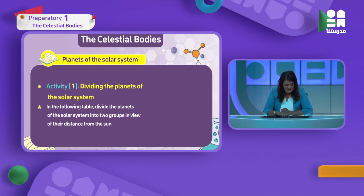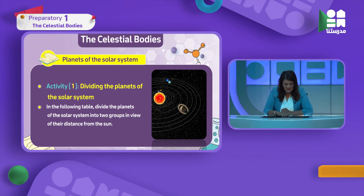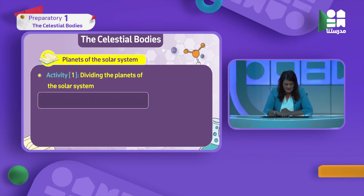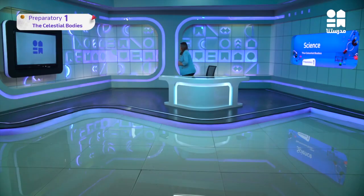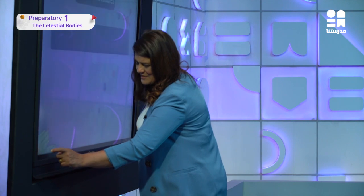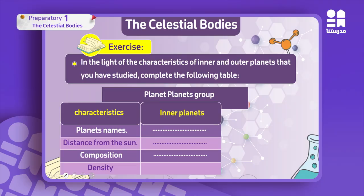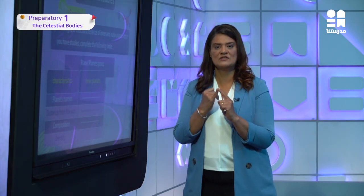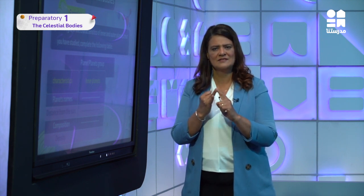Let's review how the planets are divided. We have the sun and 8 planets revolving around it. In order: Mercury, Venus, Earth, Mars, Jupiter - which is the fifth planet - Saturn, Uranus, and Neptune. Neptune is the last, the coldest, and the farthest from the sun.